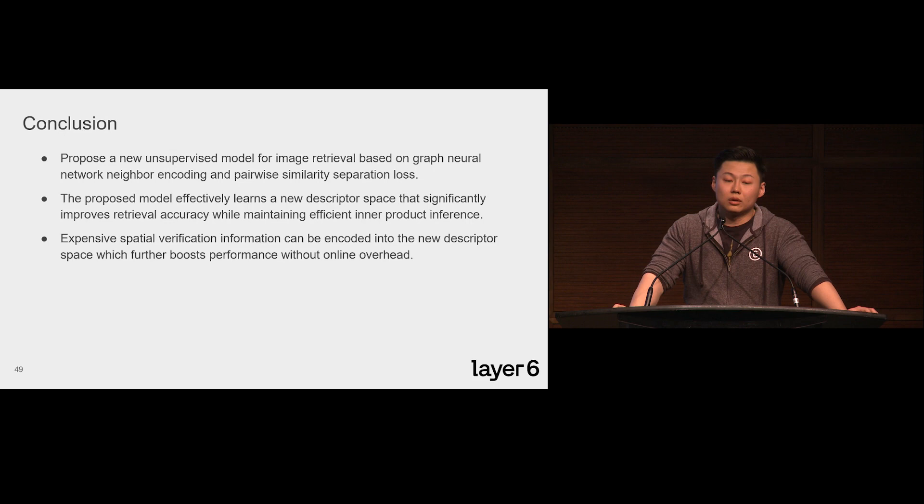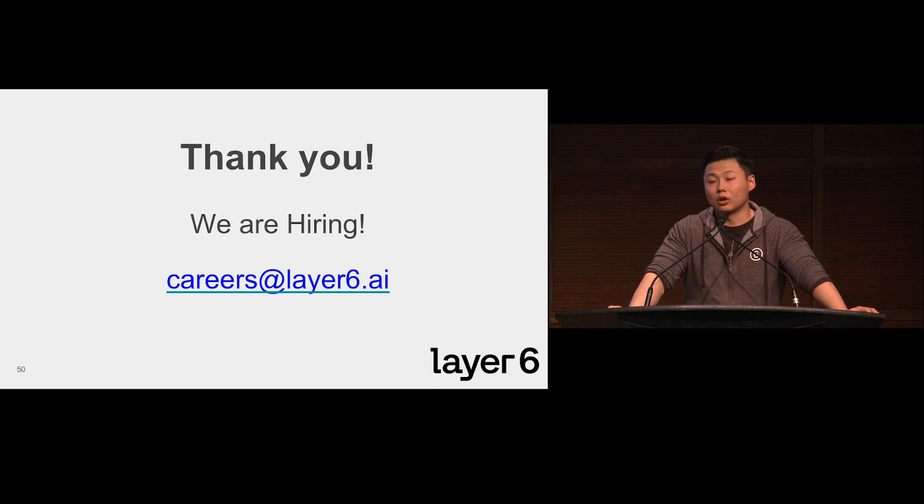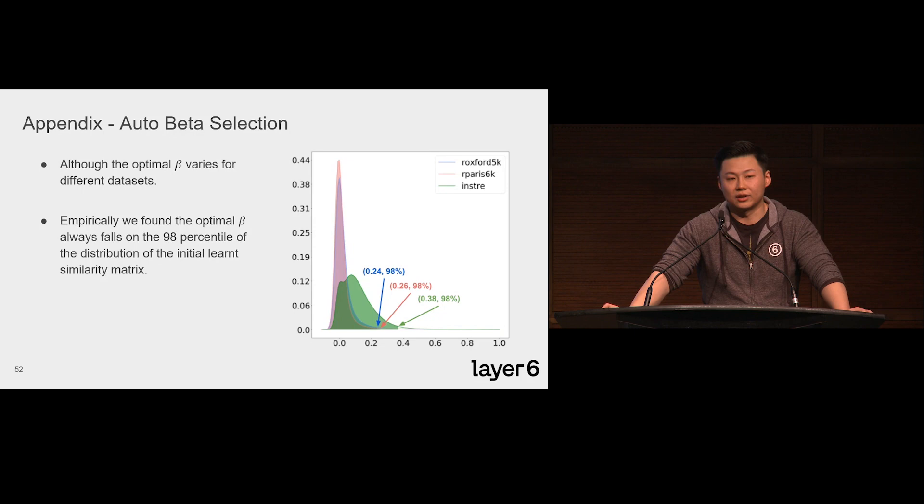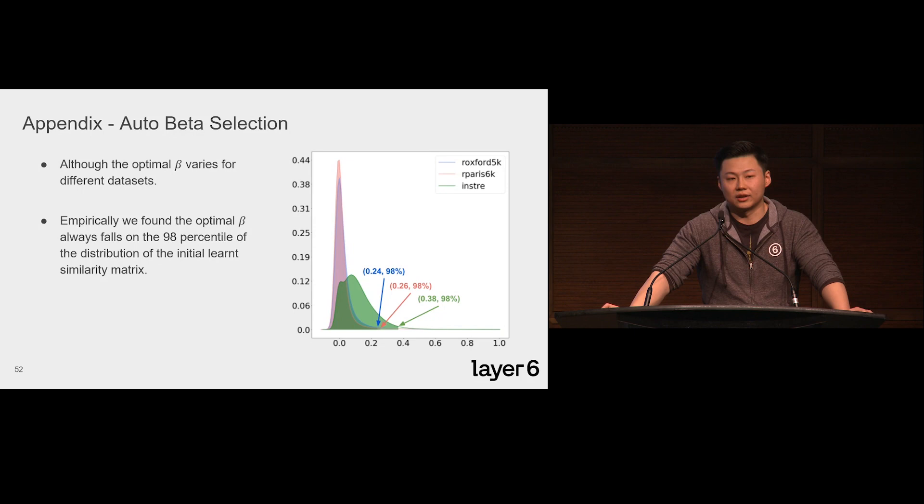To conclude, we proposed a new unsupervised model for image retrieval that can encode manifold information into a new descriptor space. This model achieves a new state-of-the-art result on all datasets with or without using spatial verification. Expensive spatial verification information can also be encoded into the new descriptor space, which boosts the performance even further without hurting the online inference speed. Thanks a lot for listening. I'll take questions related to this paper after the other speakers' talks. If you have any other questions about Layer 6, let's chat at the networking event afterwards. Thanks a lot.